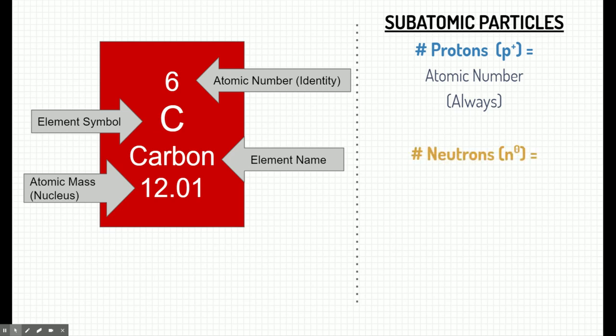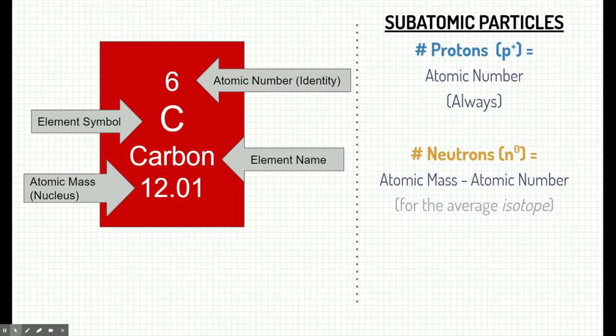The number of neutrons is a little more challenging to figure out. If you remember, neutrons are part of the nucleus — part of the mass of an atom. So if we know the mass of an atom and subtract the number of protons, we can figure out how many neutrons there are. That gives us the average for that element's isotope. We'll talk about isotopes at a later date — don't worry so much about that word, just write it down for now.